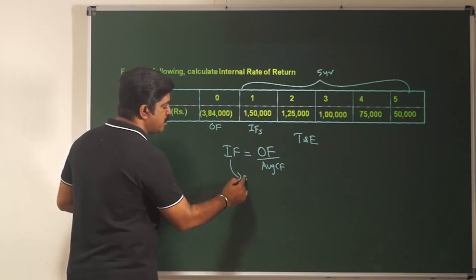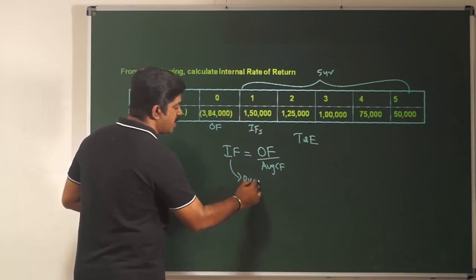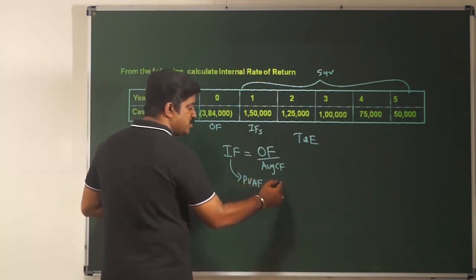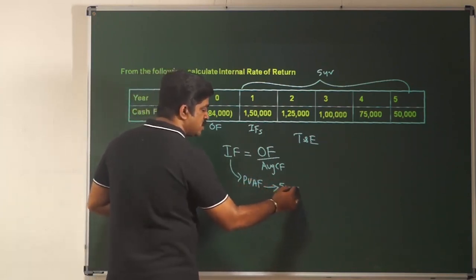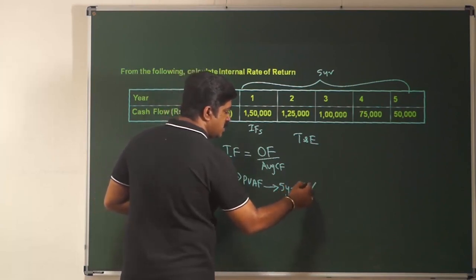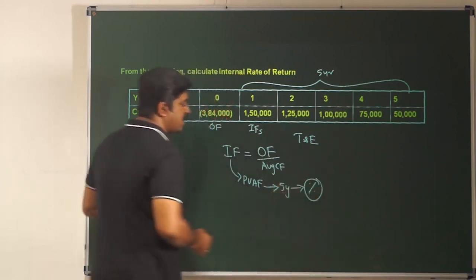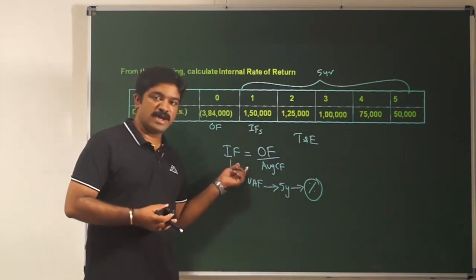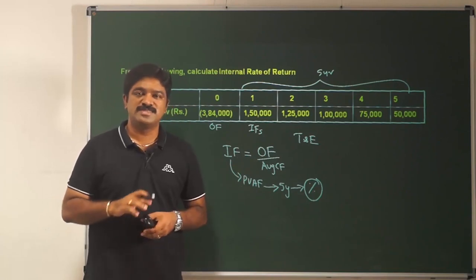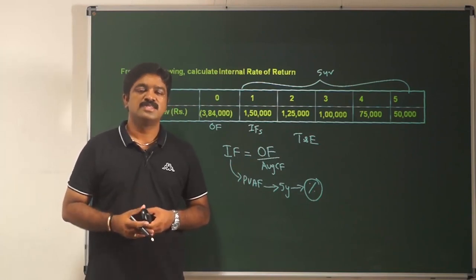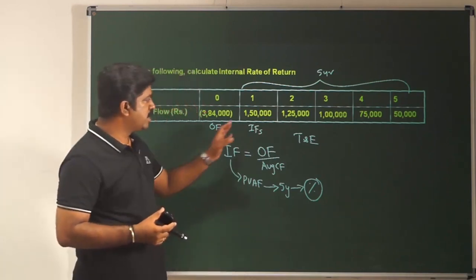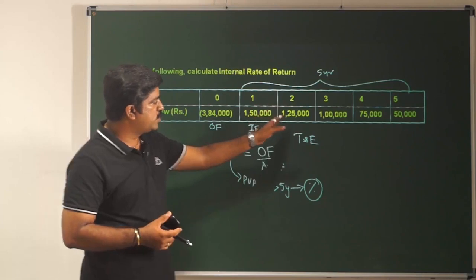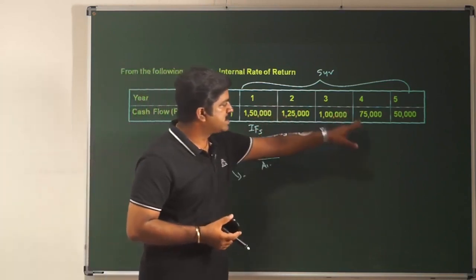You then trace that investment factor in the present value annuity factor table across 5 years, and that will give you the range where your IRR is lying. But keep in mind: this investment factor will not give you the exact IRR. Please look at the cash flows: 150, 125, 100, 75, 50.